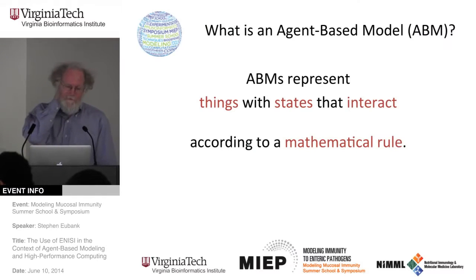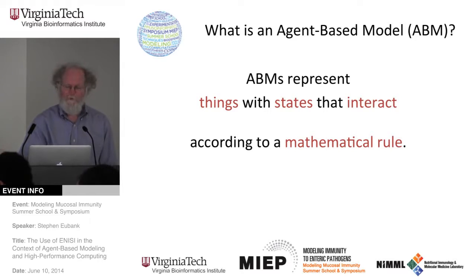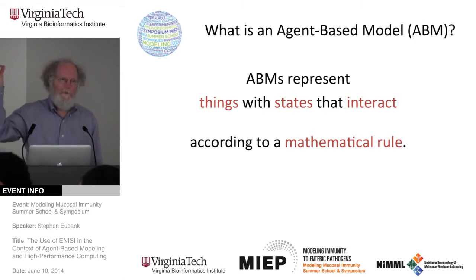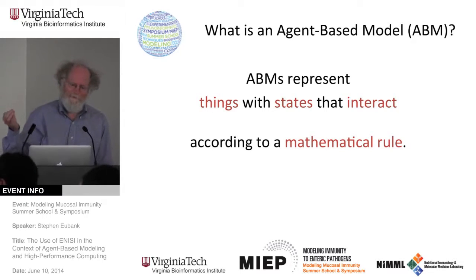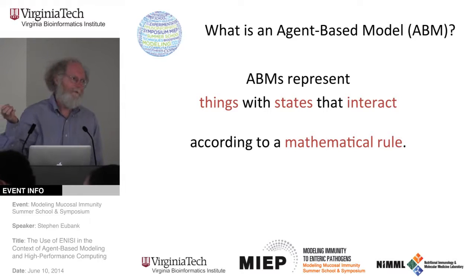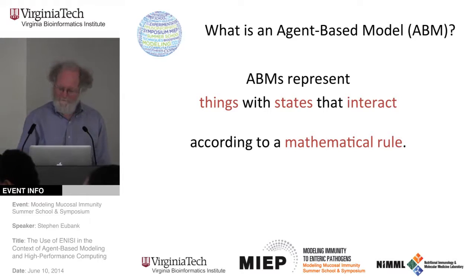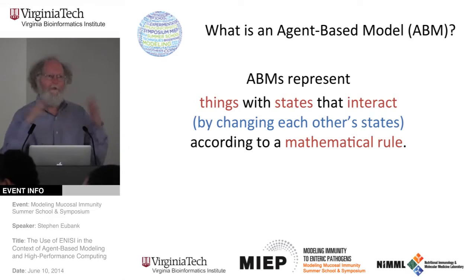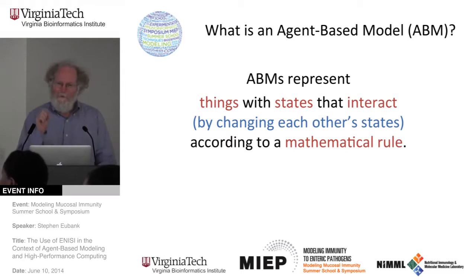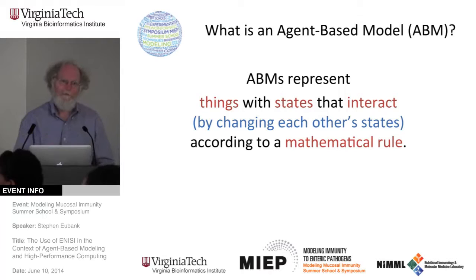What is an agent-based model? Dave went through this pretty well yesterday, and I'm just going to reinforce some of the things he said. For agent-based models, you have to have something that's going to be the agent. That thing has a state, and it interacts with other things in a very mathematically well-specified way. By interact, I don't mean some vague notion — I mean that the state of one thing changes the state of another thing. That's what an interaction is.